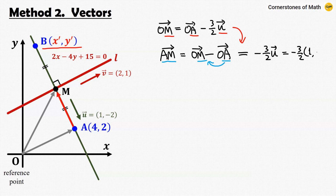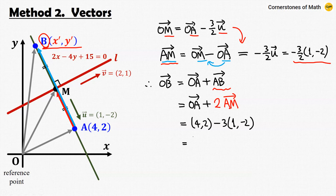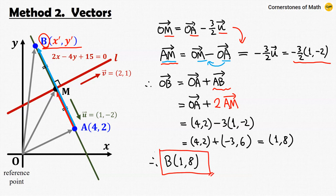Now we can find point B. The position vector OB equals OA plus vector AB, and vector AB is exactly twice vector AM. So OB equals (4, 2) plus 2 times minus 3/2 times (1, minus 2), which equals (4, 2) plus (minus 3, 6), giving (1, 8). Therefore point B is (1, 8). This is the vector method, and if you are familiar with vector addition, subtraction, and dot product, this method is just as easy as the first — and sometimes even easier.